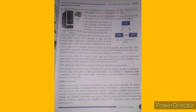The Control Unit controls all the activities of the computer and tells other parts of the computer what they should do. It uses electrical signals to direct the entire computer system to carry out and execute stored program instructions. The Memory Unit is used to store data and instructions inside the processor temporarily.